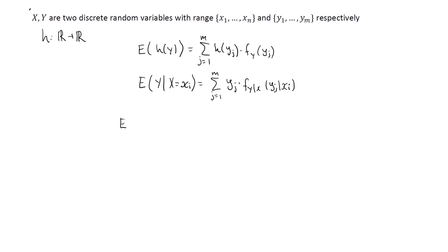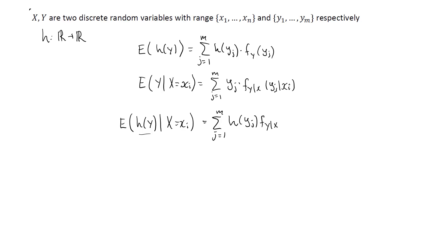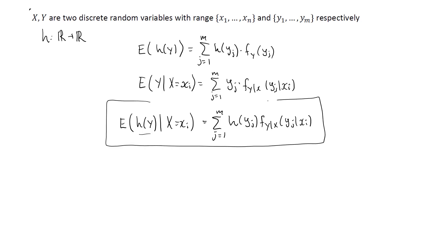So how about the conditional expectation of a function of y? We sum over all possible values of y, and since we're doing a function of y, we use h(y_j). Since it's a conditional expectation, we use conditional probabilities. Quite naturally, this gives the formula for the conditional expectation of a function of a random variable when x and y are discrete.